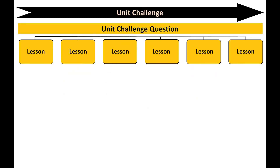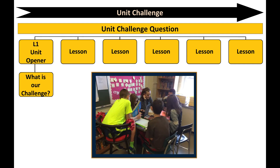Let's look at how this works. Students first consider the Unit Challenge question in the first lesson of the unit, known as the Unit Opener. In this lesson, students demonstrate their current understanding and preconceptions of the unit performance expectations and Unit Challenge topic through an exploration and anchoring phenomena. Students then review the Unit Challenge scenario and work together to define the problem outlined in the challenge. The first lesson concludes with a Unit Bubble Map activity where students consider what questions they would need to investigate in order to answer the Unit Challenge question.